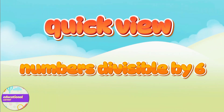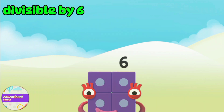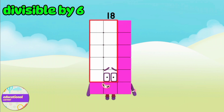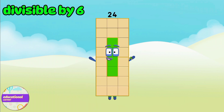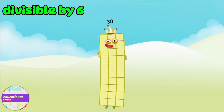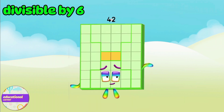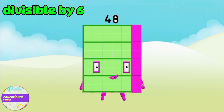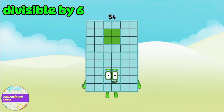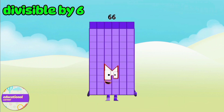Quick view — numbers divisible by six: 6, 12, 18, 24, 30, 36, 42, 48, 54, 60, 66.